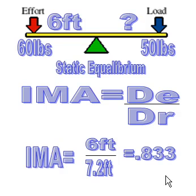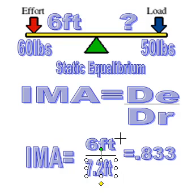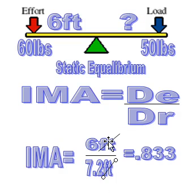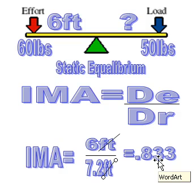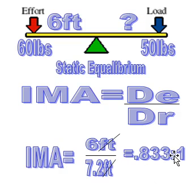Now what does that mean? Do you put feet next to it? No — you don't put feet next to it because you have factored out foot over foot. A foot over a foot cancels out because one over one is one; one foot over one foot is one. So you get rid of the units, and instead of just saying 0.833, we say 0.833 to one. It now becomes a ratio, noted by adding colon one.